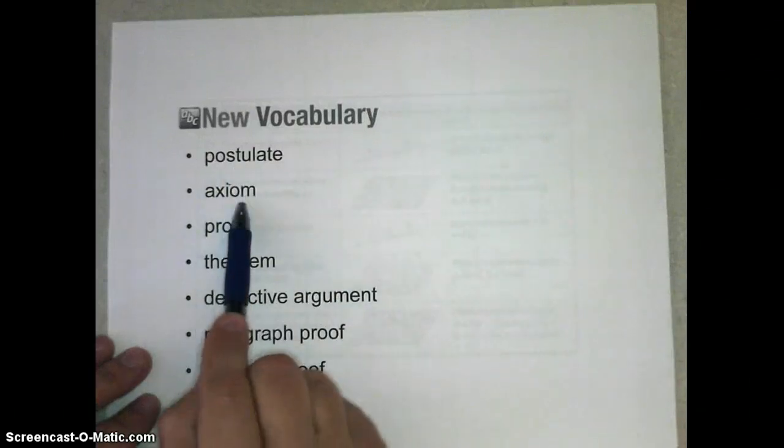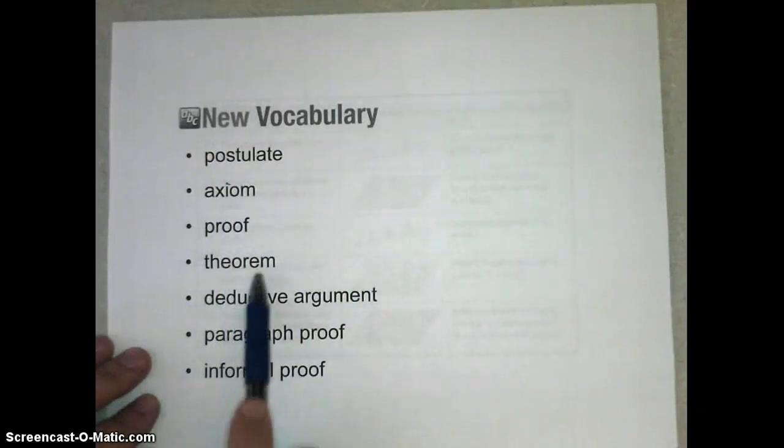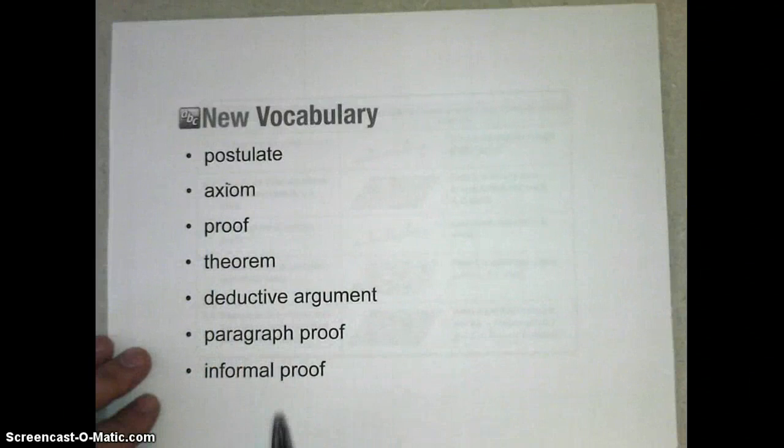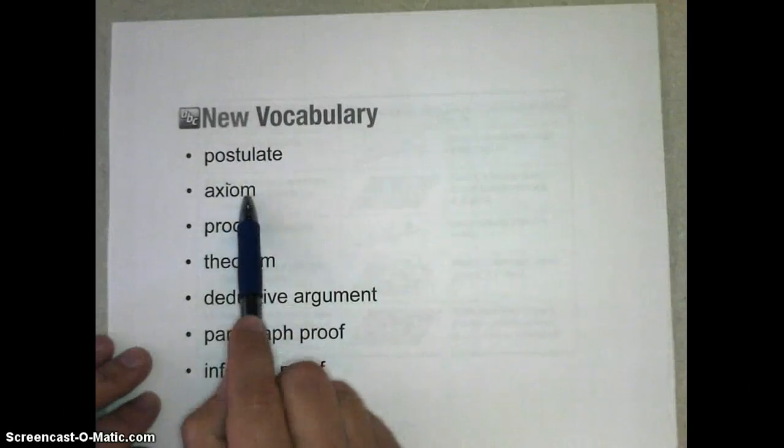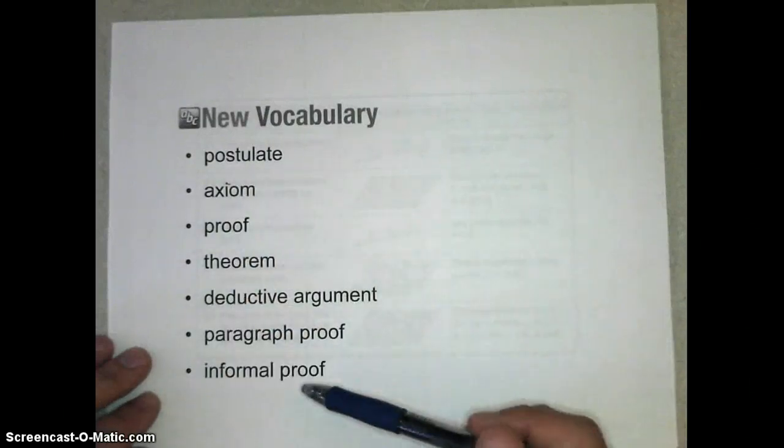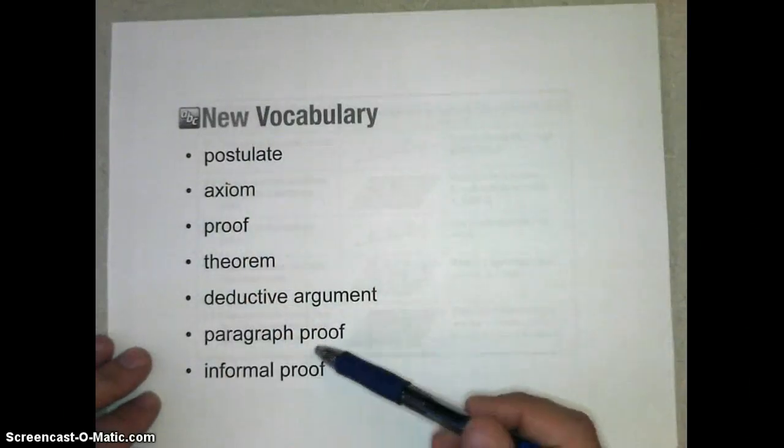We are talking about the words postulate and axiom, proof, theorem, deductive argument, paragraph proof, and informal proof. Some of these vocab words are really just another way of saying the same thing as another vocab word. Like an axiom is another word for a postulate. Informal proof can be very much like a paragraph proof.